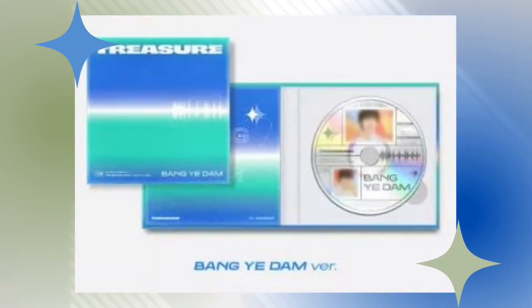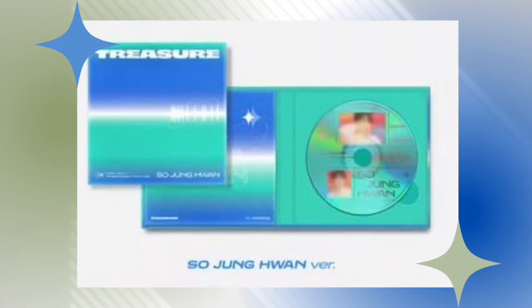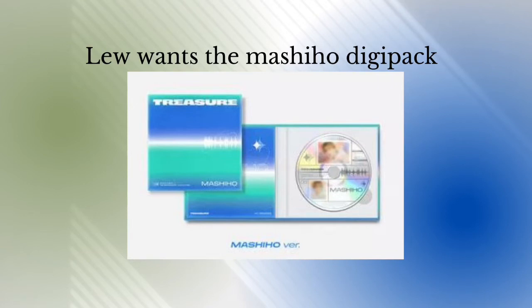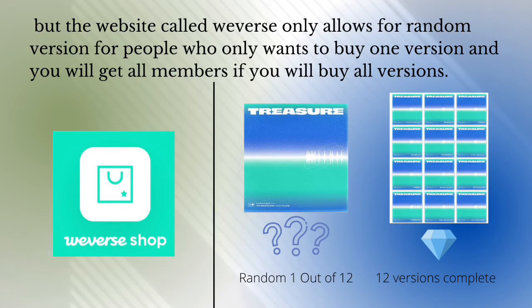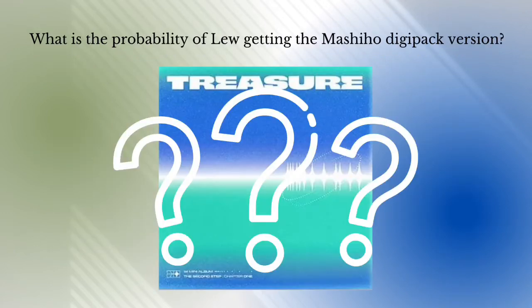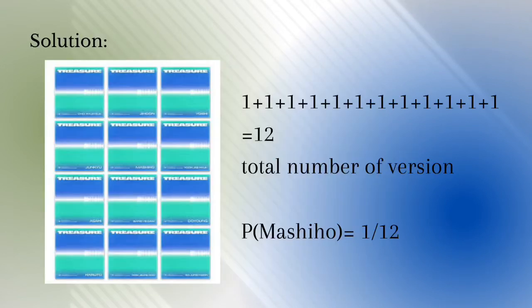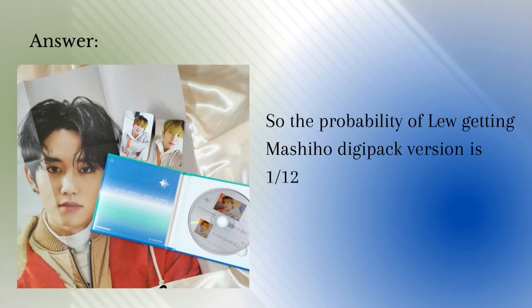Lu wants the Mashihou digipack, but the website Weverse only allows a random version for people who buy just one, and you get all members if you buy all versions. What is the probability of Lu getting the Mashihou digipack version? Solution: 1 plus 1 (times 12 members) equals 12 total versions. P(Mashihou) = 1 out of 12. So the probability of Lu getting the Mashihou digipack version is 1 out of 12.